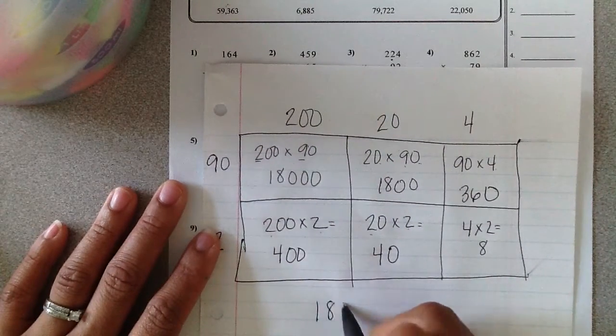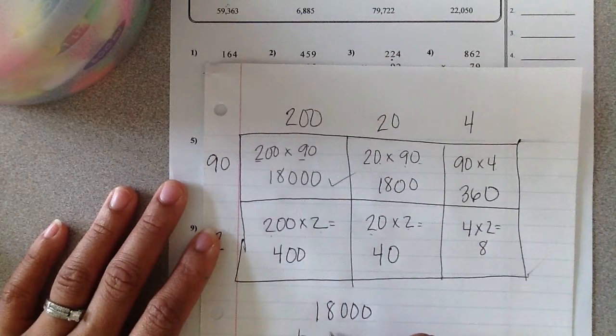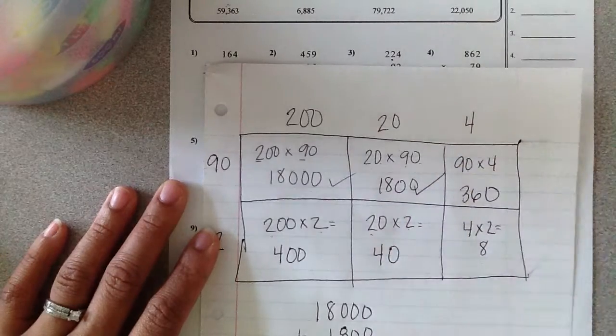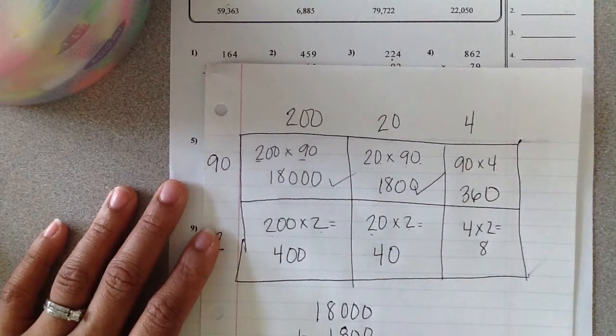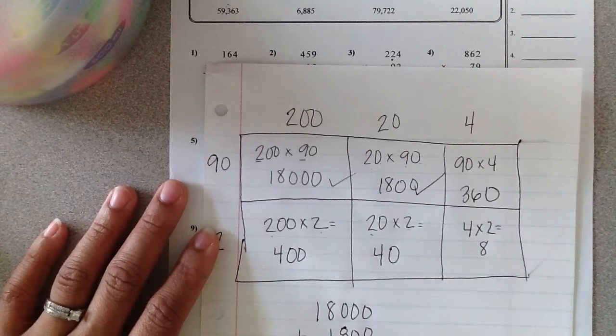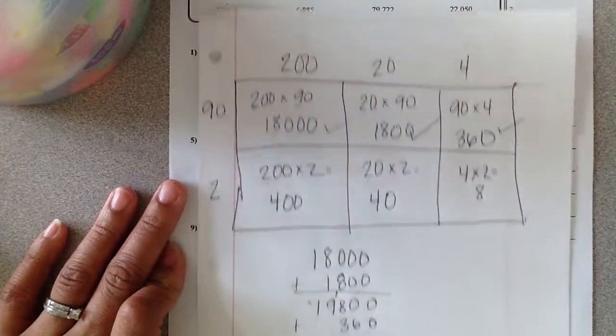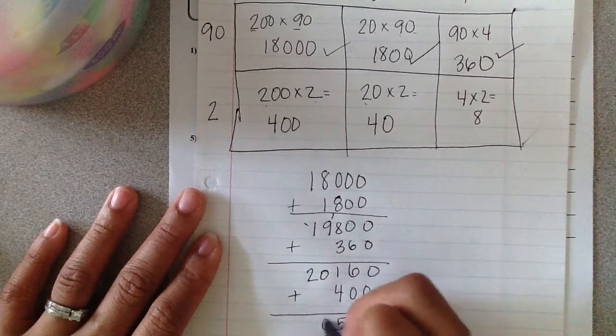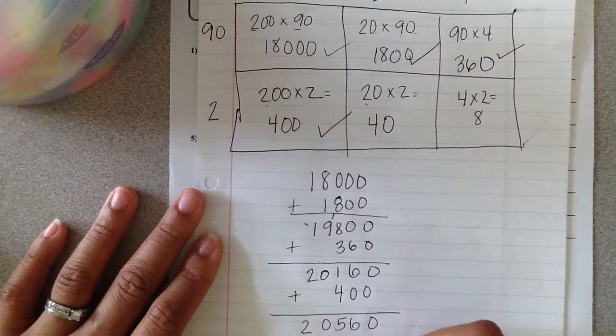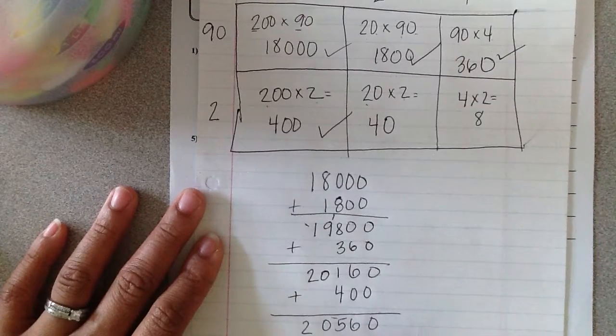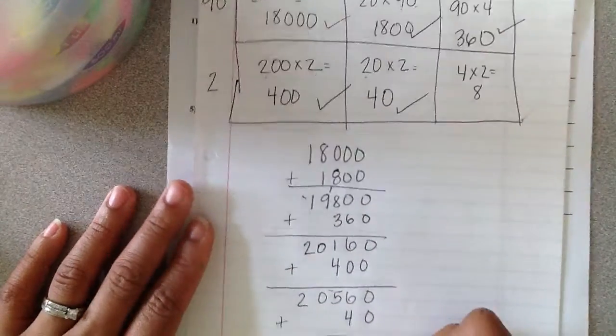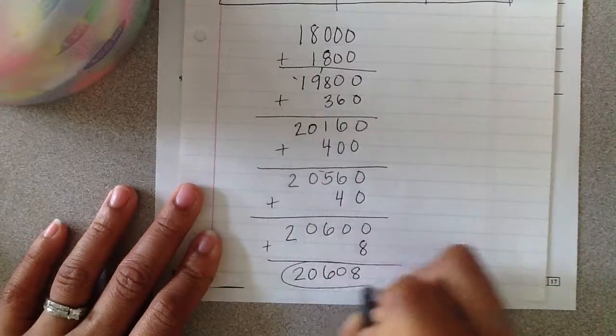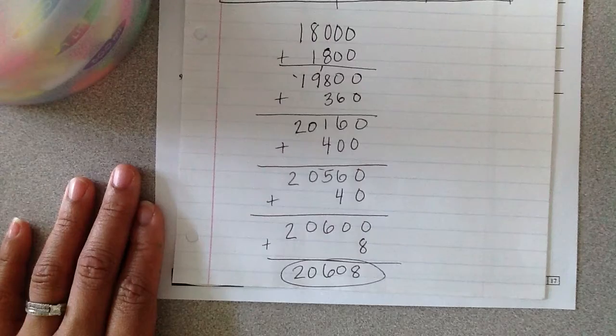I'm going to do eighteen thousand plus eighteen hundred or one thousand eight hundred and I get nineteen thousand eight hundred. I'm going to add three hundred sixty to that. Then I'm going to add four hundred to that. Add forty to this. And then finally add eight. So I get twenty thousand six hundred eight as my final answer for number three.